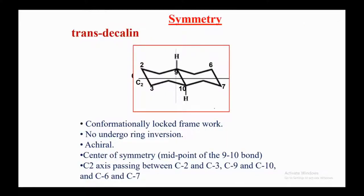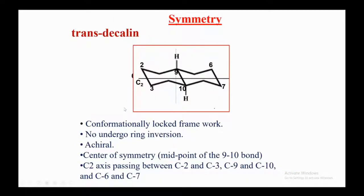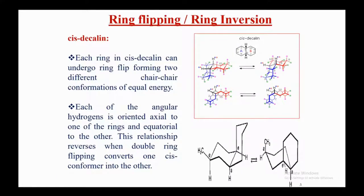Trans-decalin has a conformationally locked framework and cannot undergo ring inversion. It has a center of symmetry at the midpoint of the C9–C10 bond and a C2 axis passing between C2–C3, C9–C10, and C6–C7. The cis isomer is achiral, while the trans isomer is chiral.